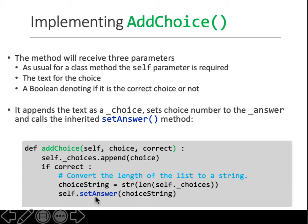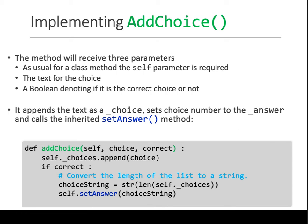Then you say the choice string is whatever the length of the list is so far, convert it into a string, and save it in this variable called choiceString. Then set the correct answer to choice A, B, C, D, or 1, 2, 3, 4. So if choice 3 is passed as correct, your list length will be 2 — starting from 0, 1, 2 — so 3 members. Convert 2 to a string, put it in this variable, and set the answer to that string.